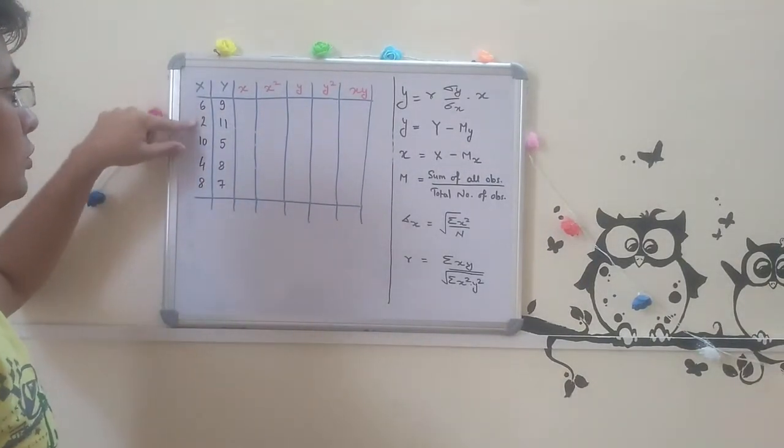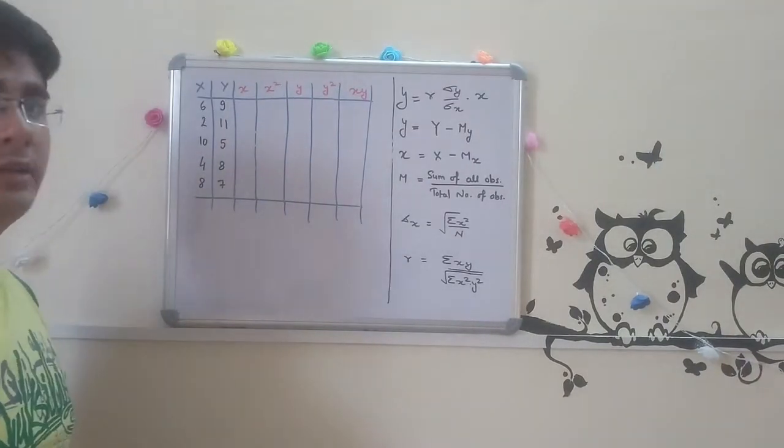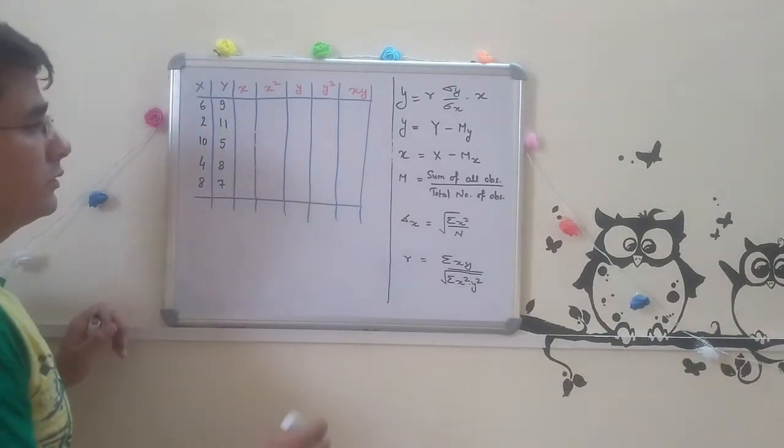We have data: x as 6, 2, 10, 4, 8 and y as 9, 11, 5, 8 and 7. For finding the regression equation, we need mean of x.